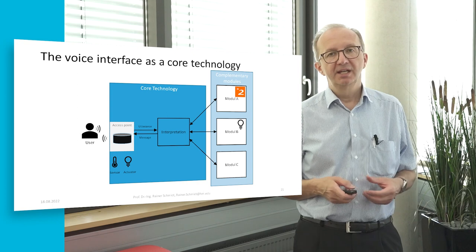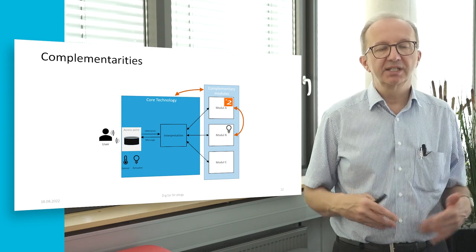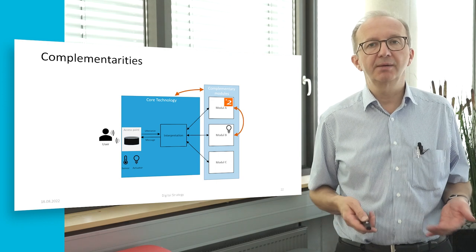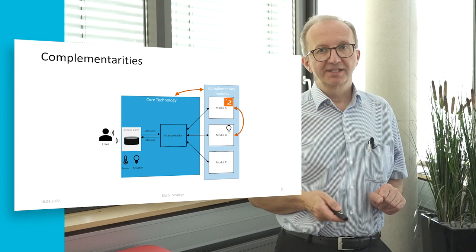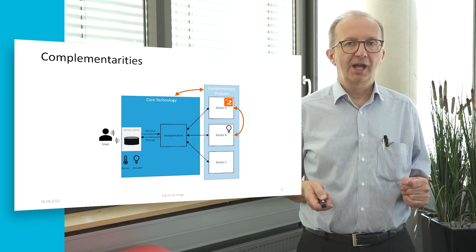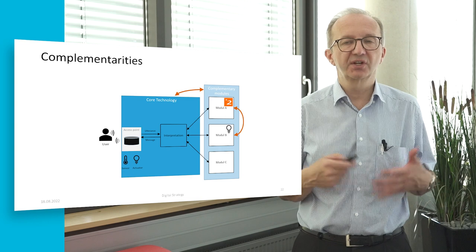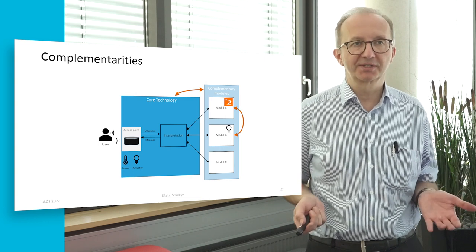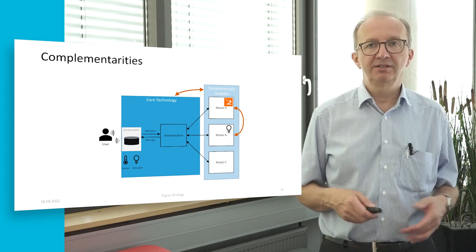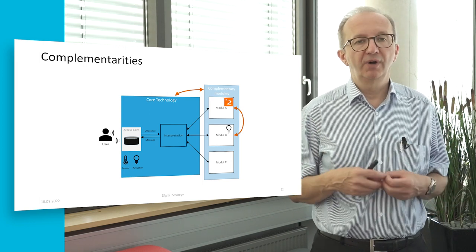Innovation platforms create something called complementarities — value created beyond the value of the product itself, because you can combine certain things. For example, look at intelligent light bulbs that can be switched on and off via voice on Alexa. No producer of light bulbs would develop voice recognition on their own, because it took billions of dollars as Amazon had to learn with Alexa. Instead, they use this core technology, and in this way these light bulbs become more valuable to the customer.